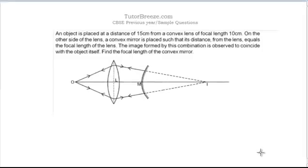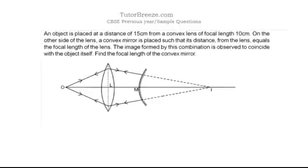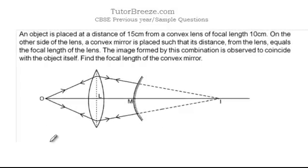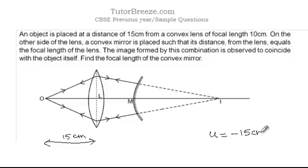Now I'm going to discuss a couple of 2 and 3 mark questions. Let's first take a look at this question. The object is placed at a distance of 15 cm, which means u is equal to negative 15 cm. You have a negative sign with the real object all the time, because the object is placed on this side and light is travelling in this direction. The distance is measured from the centre of the lens, so the object distance is always negative for a real object.